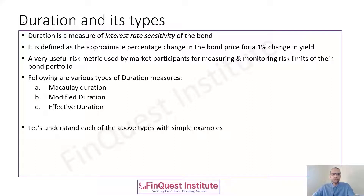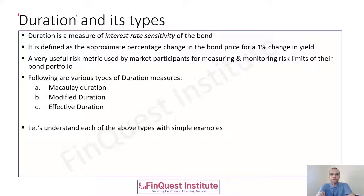Starting with duration: duration is a measure of interest rate sensitivity of the bond. By definition, it is defined as an approximate percentage change in bond price for a one percentage change in yield.